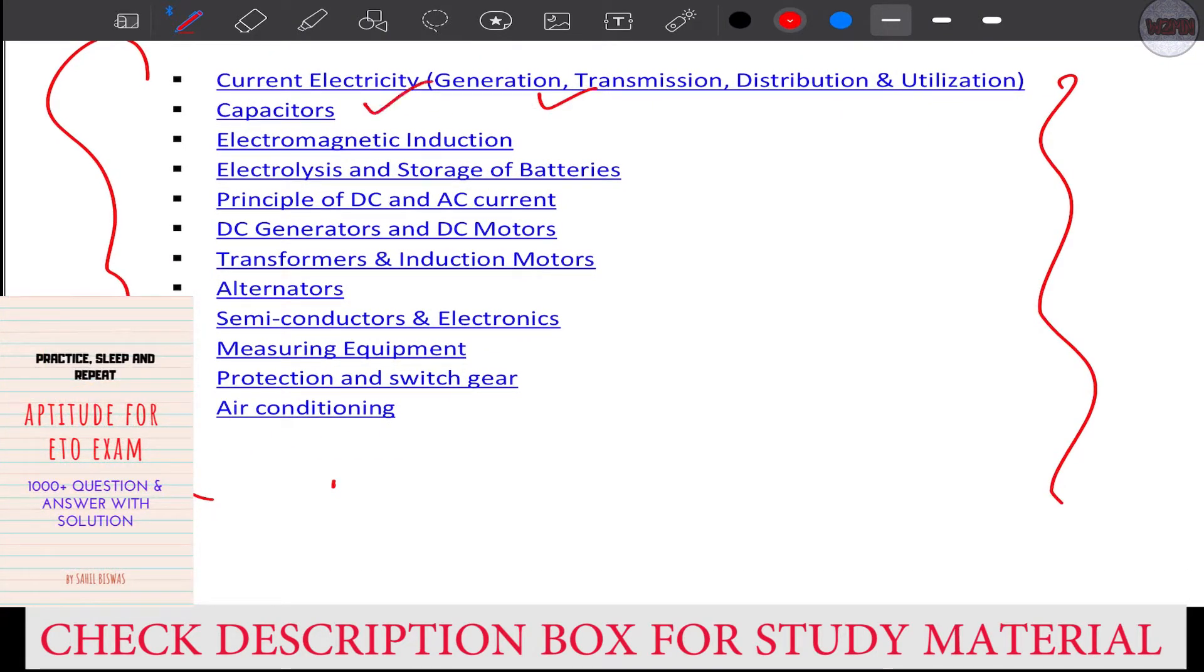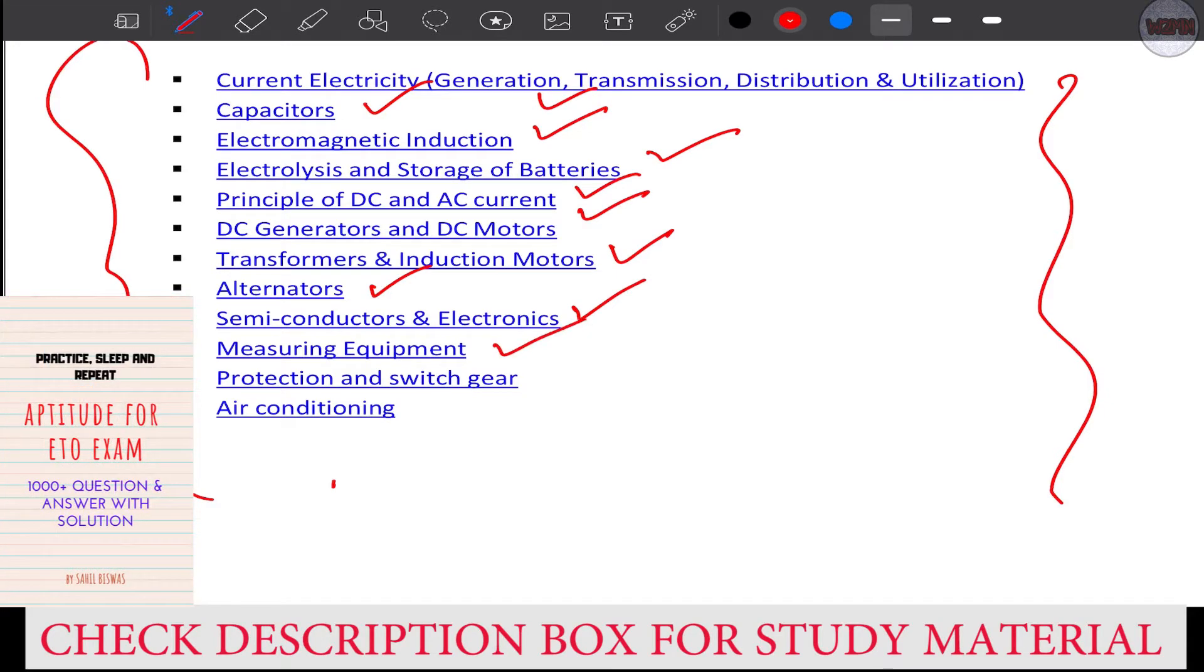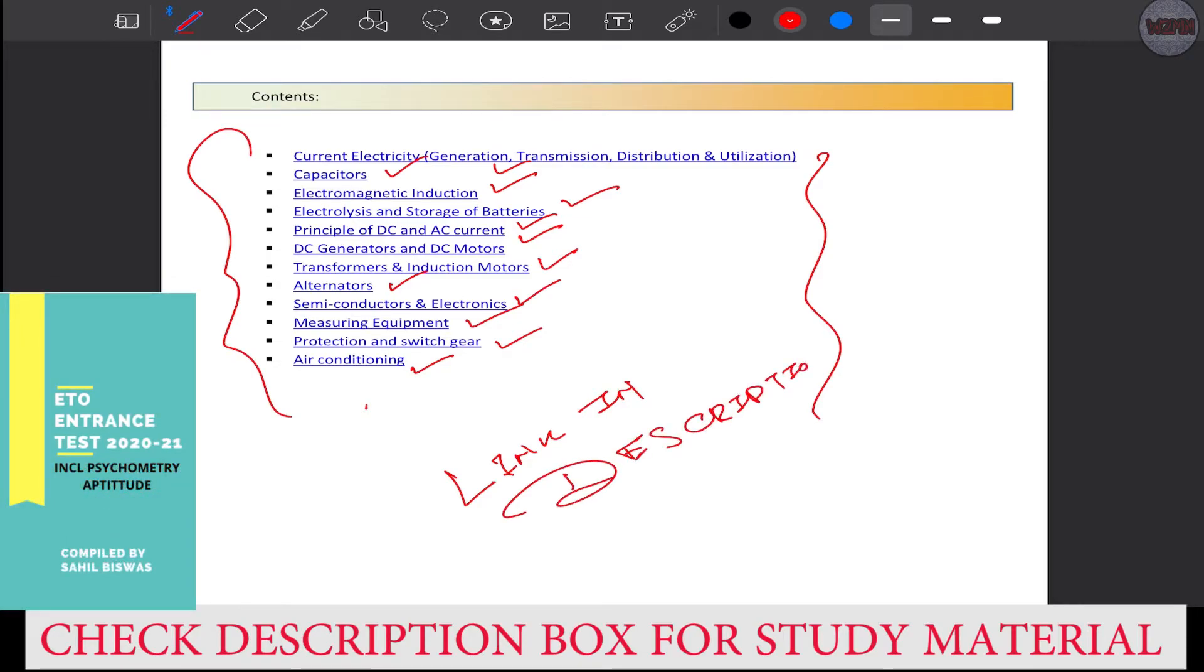Electric current, capacitor, electromagnetic induction, electrolytes and storage of batteries, principle of DC and AC current, DC generator, DC motors, transformers, induction motors, alternators, semiconductor and electronics, measuring equipment, protection and switchgear, and air conditioning. These things you'll get. So check the description - link is in the description box.